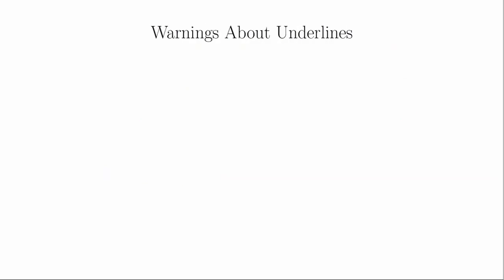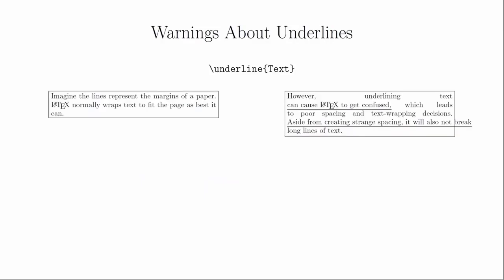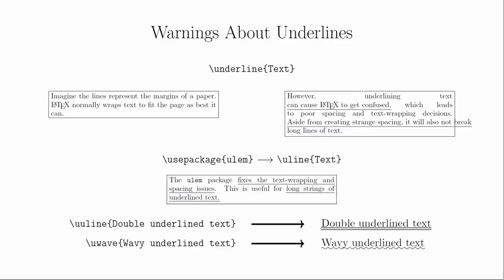There's a little bit of a warning that comes with underlining. For individual words it works fine, but the default underline command for LaTeX doesn't know how to break across lines very well. If you need to underline a longer string of text, you should use the ulem package. In the preamble, include this package and then use \uline instead of \underline. The ulem package also has other features such as double underlining and wavy underlining, but you can explore these on your own.